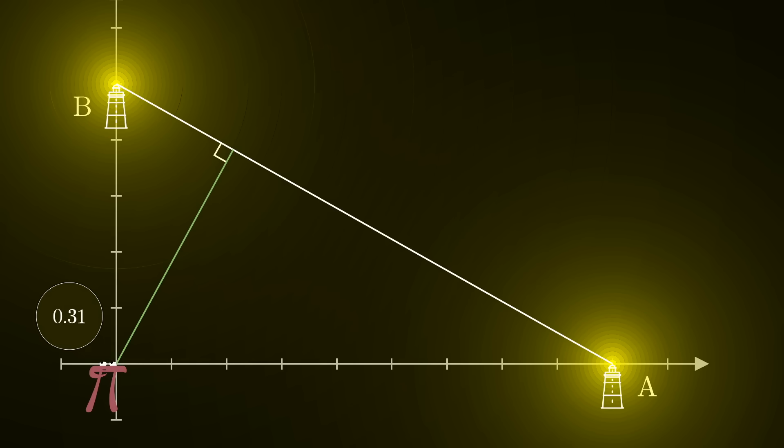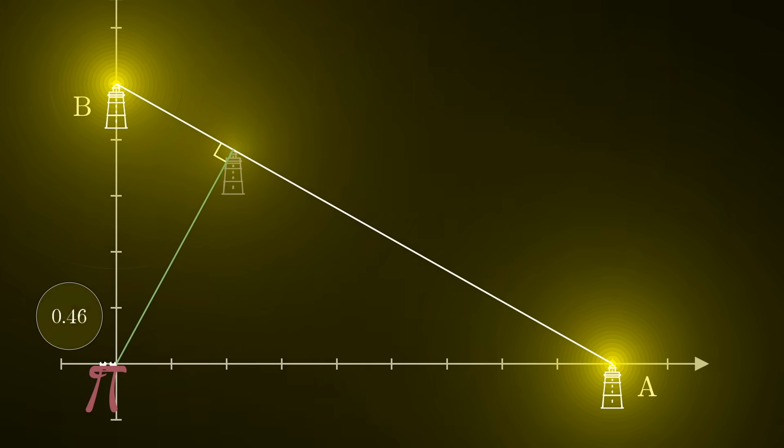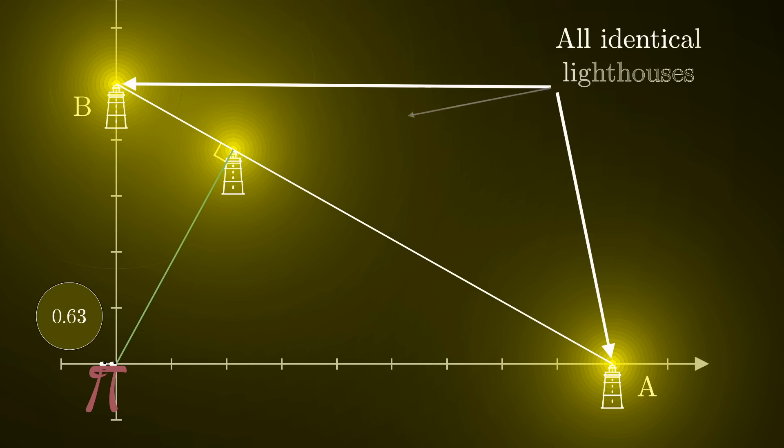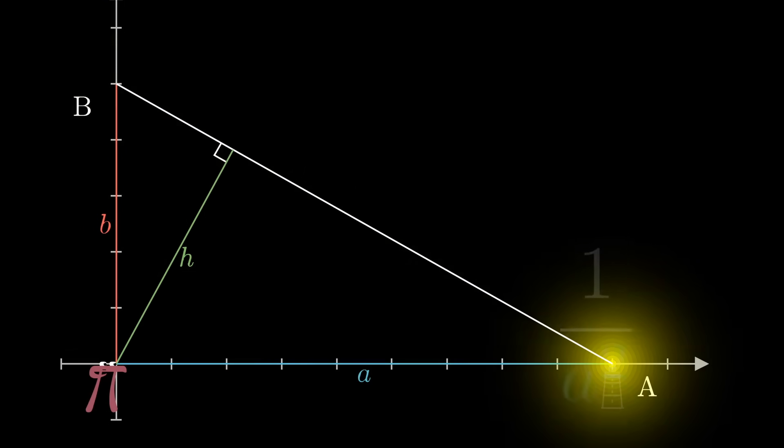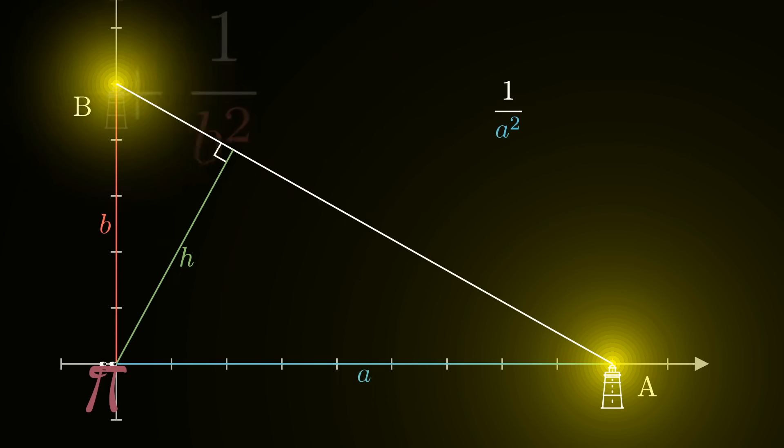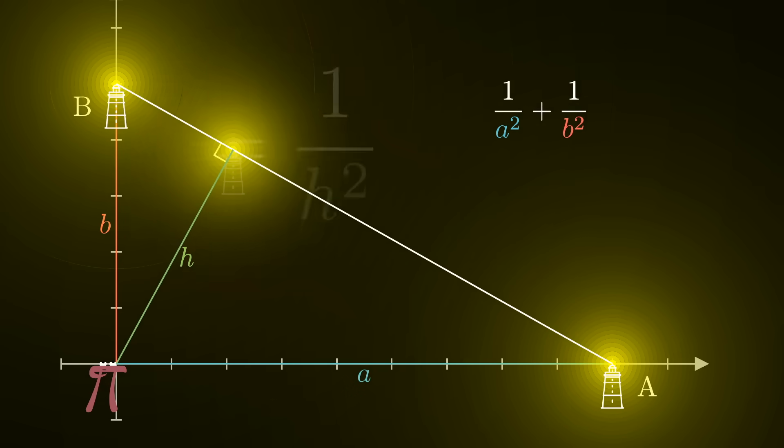And I should say by the way that the standing assumption throughout this video is that all lighthouses are equivalent—they're using the same light bulb, emanating the same power, all of that. So in other words, assigning variables to things here, if we call the distance from the observer to lighthouse a little a, and the distance from the observer to lighthouse b little b, and the distance to the first lighthouse h, we have the relation 1/a² + 1/b² = 1/h².